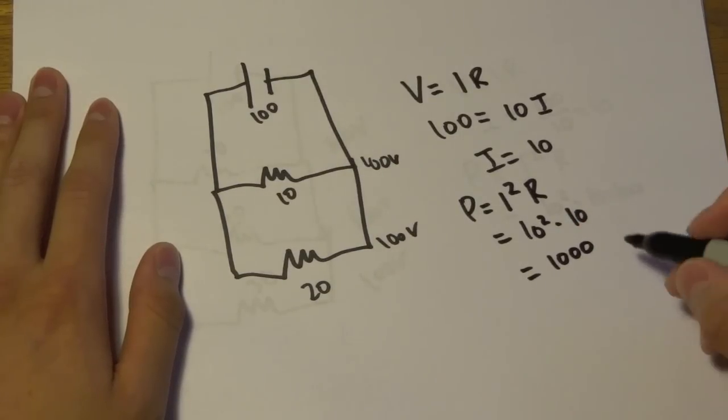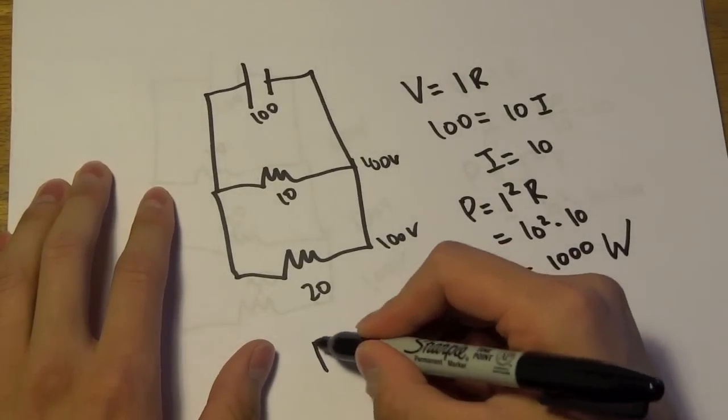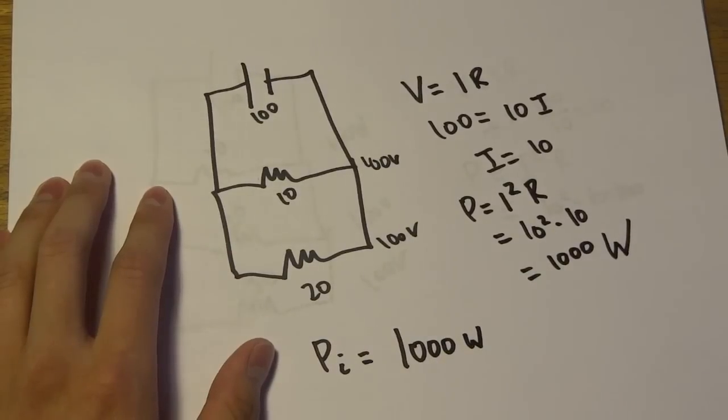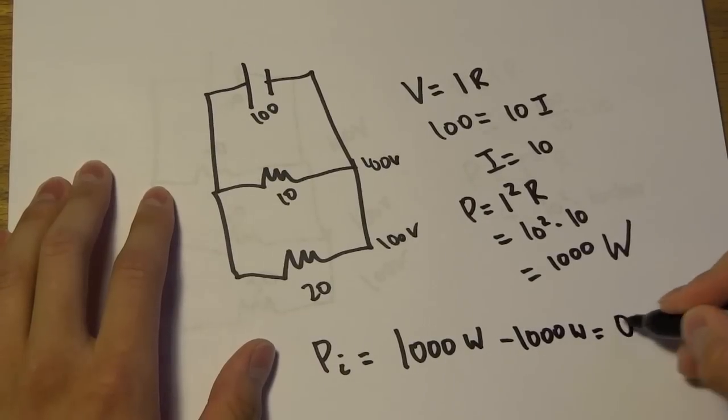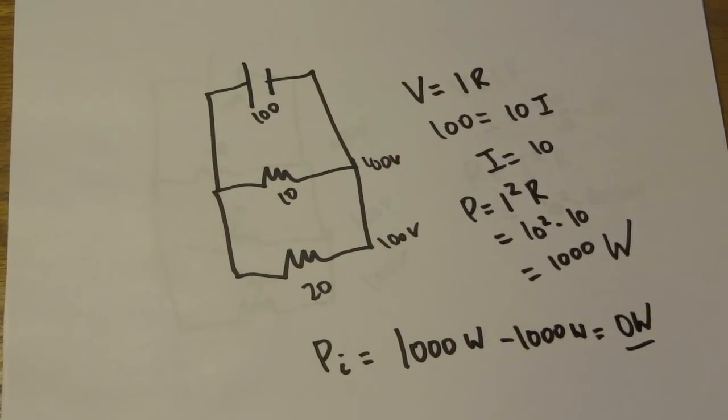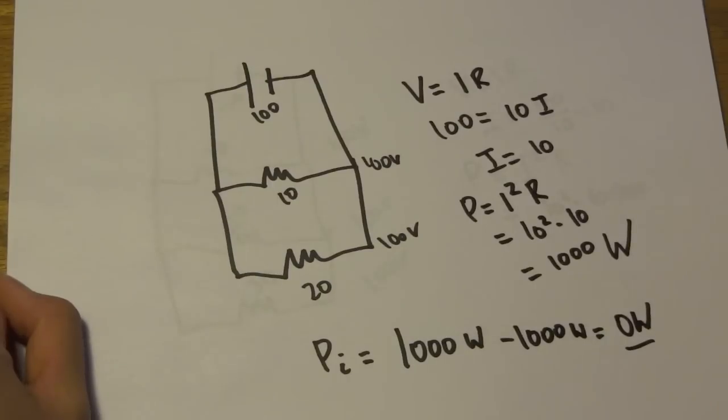And so if we see, the power is actually the exact same. Power is in watts. Power initial equals 1000 watts, and power final is also 1000 watts. So our power difference is going to be 0 watts. That's something they like to test a lot: in parallel, we don't have any difference in power once we change anything, once we remove a resistor. Because that's how parallel resistors work.